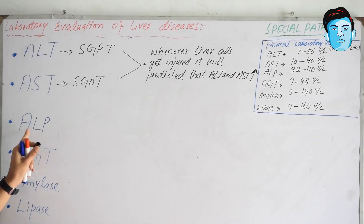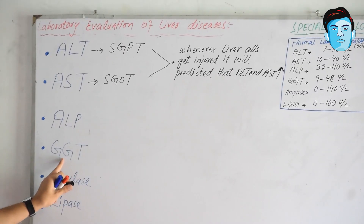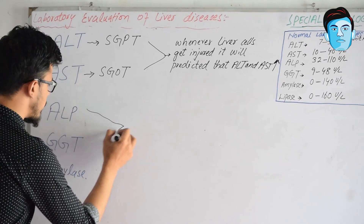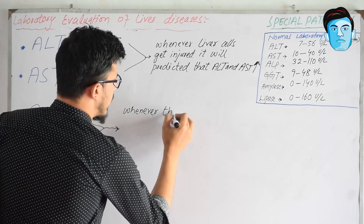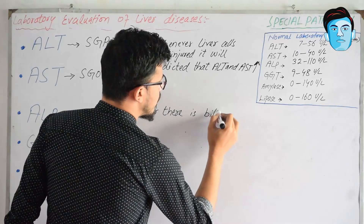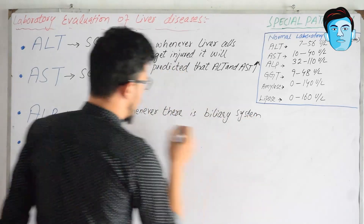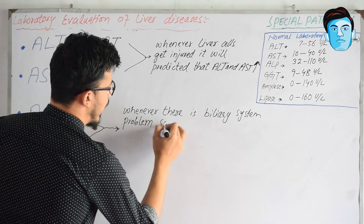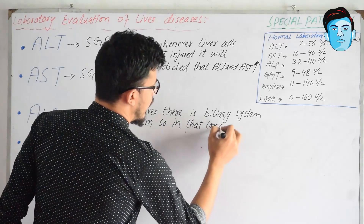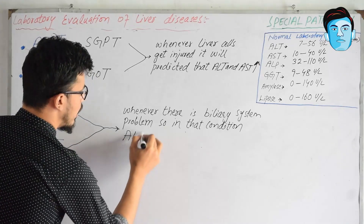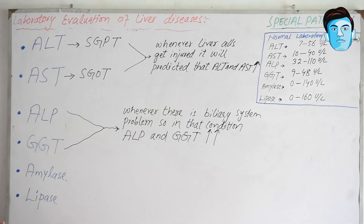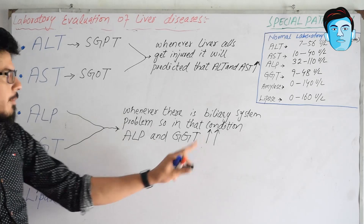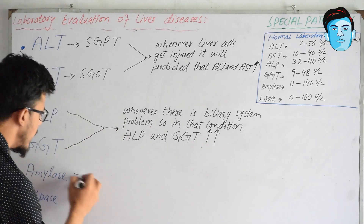ALP stands for alkaline phosphatase and GGT stands for gamma glutamyl transpeptidase. Whenever there is a biliary system problem, the ALP and GGT values increase from the normal range.